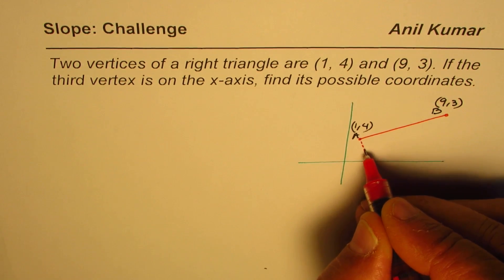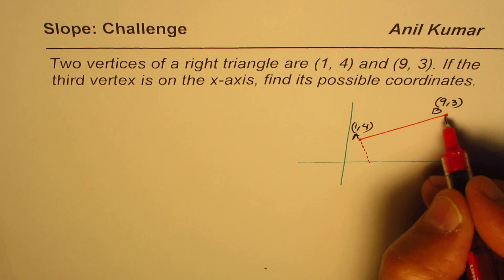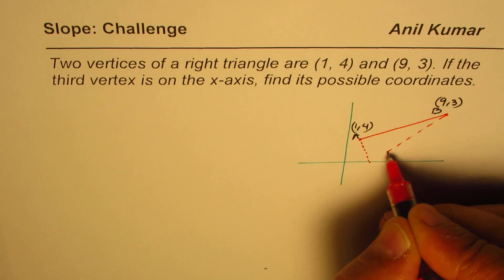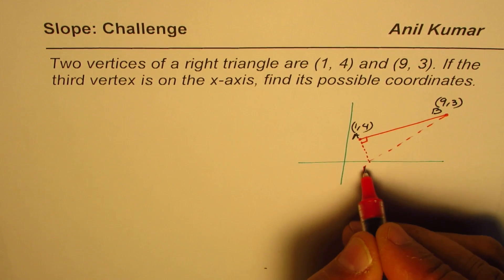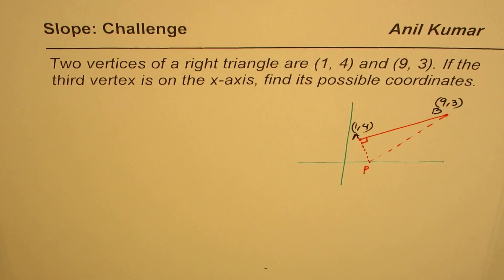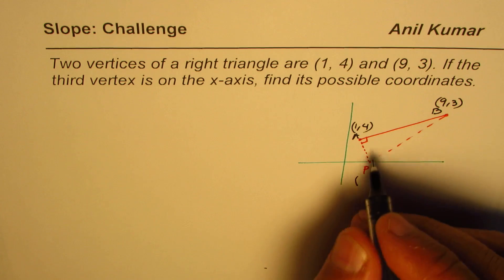So that is to say that it could be somewhere here. So let me draw a line perpendicular from A. So that could be one possible solution where this is a right triangle. Let me call this point as P and the coordinates of the point P can be taken as some value (a, 0).